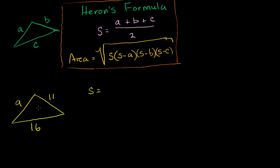So let's apply Heron's formula. S in this situation is going to be the perimeter divided by 2. So 9 plus 11 plus 16 divided by 2, which is equal to 9 plus 11 is 20, plus 16 is 36, divided by 2 is 18.